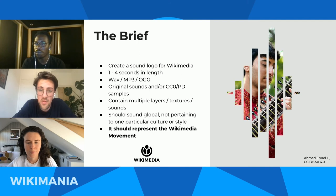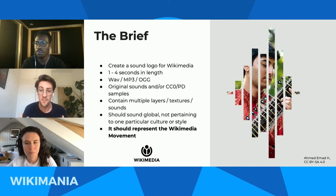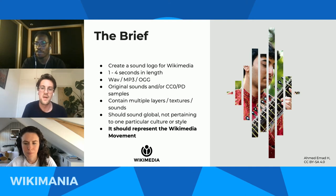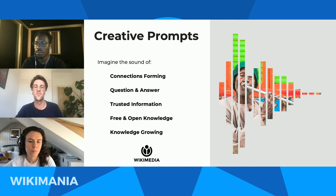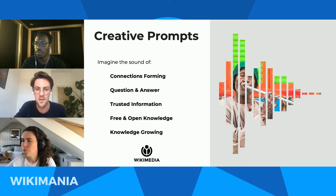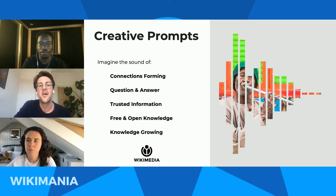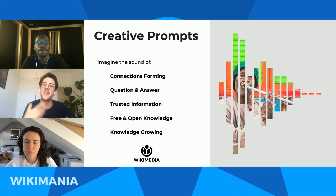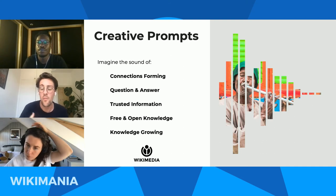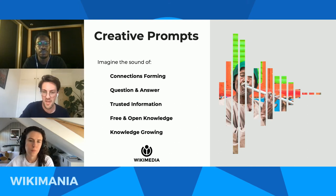We'd like you to use original sounds or the cleared samples provided. The logo should contain multiple layers, textures, and sounds to create a story and make it interesting. The sound should be global and not pertain to one particular culture or style — we want to represent the Wikimedia movement in a way that feels culturally agnostic and doesn't favor one place over another. For creative prompts, imagine the sound of: connections forming; question and answer; trusted information; free and open knowledge; or knowledge growing. Pick one to start with.